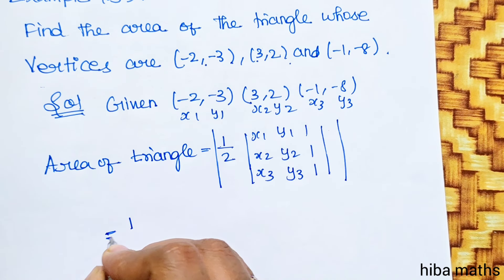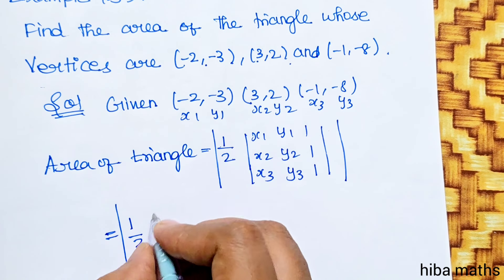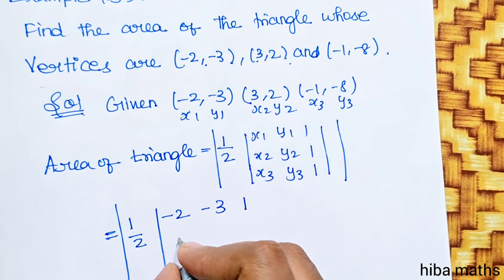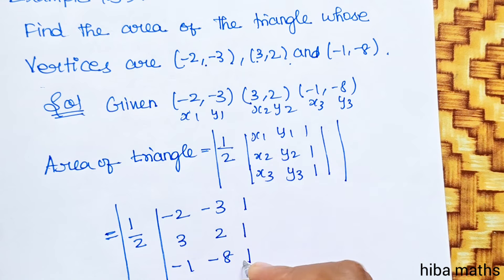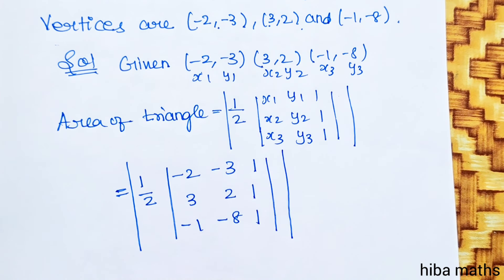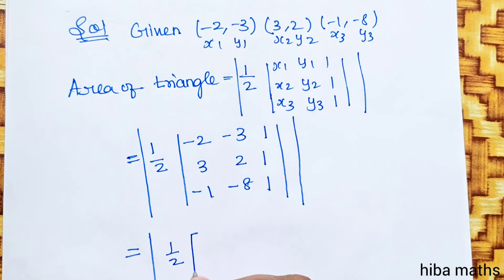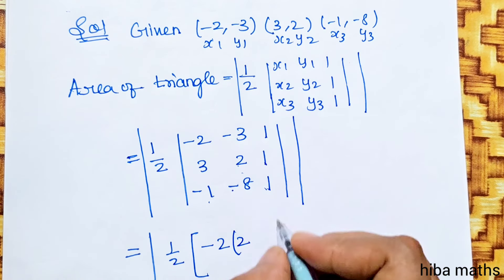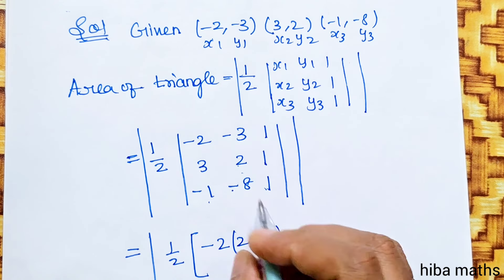That equals 1/2 times -2, -3, 1; 3, 2, 1; -1, -8, 1. That equals 1/2 times [-2 times (2 minus (-8)) equals -2 times 10, plus (-3) times (3 minus (-1)), plus 1 times (3 times (-8) minus (-1) times 2)].